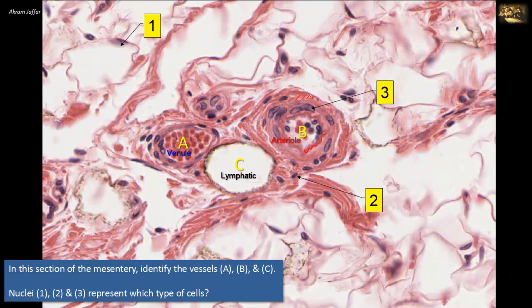Lymphatic vessels drain excess tissue fluid and return it back to the bloodstream. For the second part of the question, cell nucleus 1 belongs to an adipocyte. These are the cells which accumulate fat, and they are commonly found in the mesentery. These adipocytes are separated by fine partitions of connective tissue. You can see the single large fat droplet in the cytoplasm of the adipocyte. This pushes the remaining cytoplasm and the nucleus to one corner of the cell.